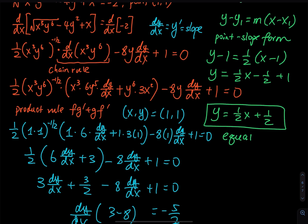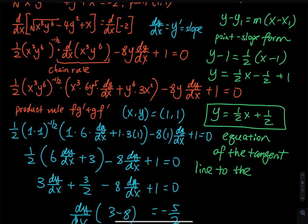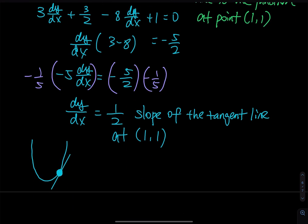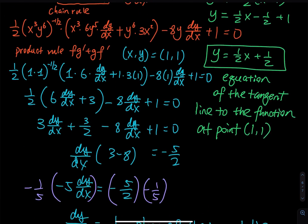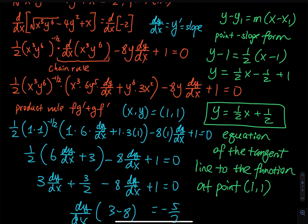This is the equation of the tangent line to the function at point (1, 1). That is the end of this problem. If you find my instruction helpful and clear, give me a like and share the video. If you're new to the channel, click subscribe. See you all in the next lesson.